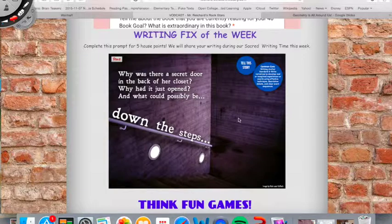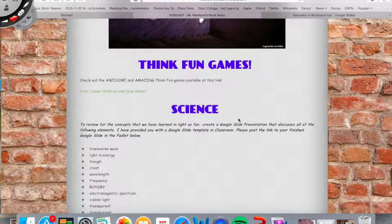The 40 book goal check in is there. The writing fix of the week is pretty awesome because it is, why was there a secret door in the back of her closet? Okay. Why had it just opened and what could possibly be down the steps? I chose this one only because it reminded me of the city of Ember. You know, the mysterious nature of the book and the different clues that we have to use to piece together to find out the different details of the book. So go ahead and do that.